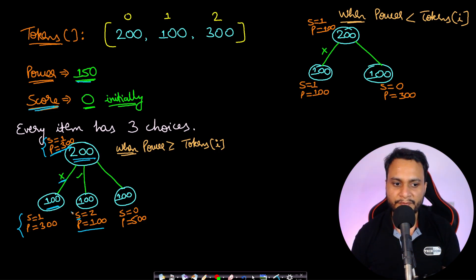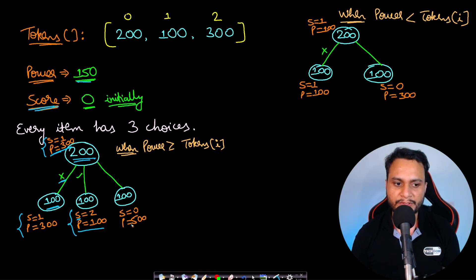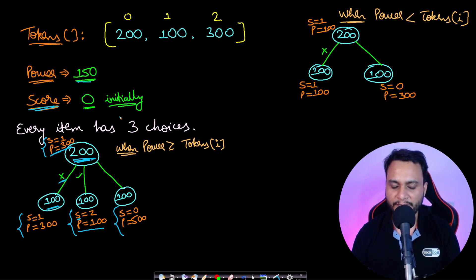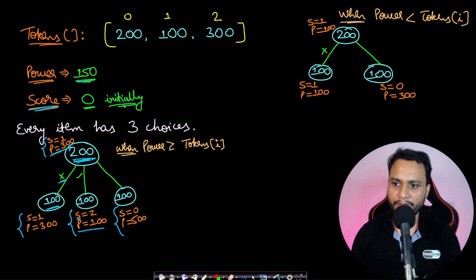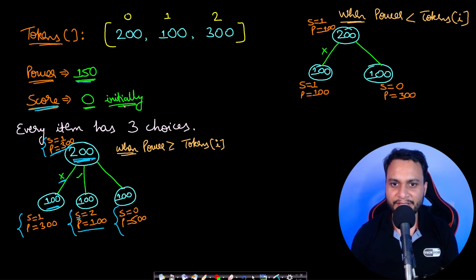Third choice: spend score to gain power, which requires score greater than 0 — true here. So score becomes 0 and power becomes 300 + 200 = 500. If you draw a decision tree diagram for these choices, you can definitely solve this by dynamic programming.